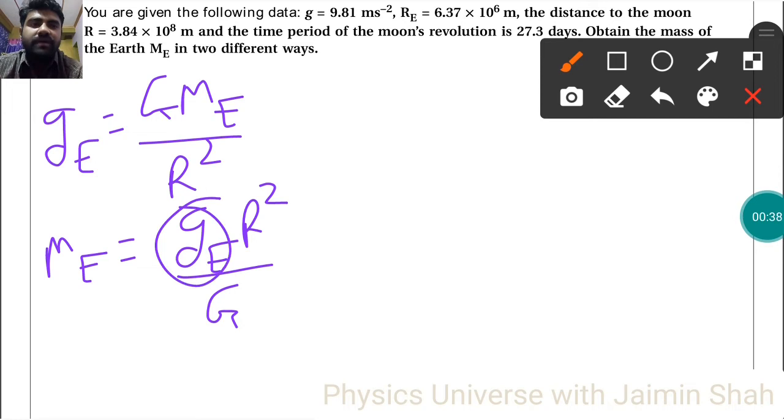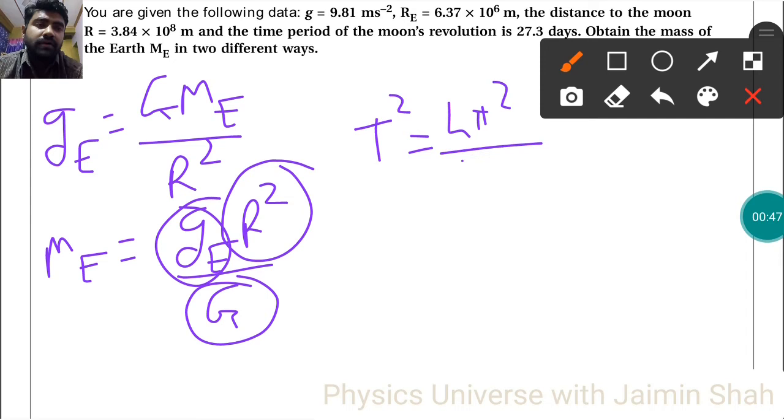G we have as 9.8, R is the radius of Earth, and G is constant. Now the second equation: T square equals 4π² upon GME into RE cube.